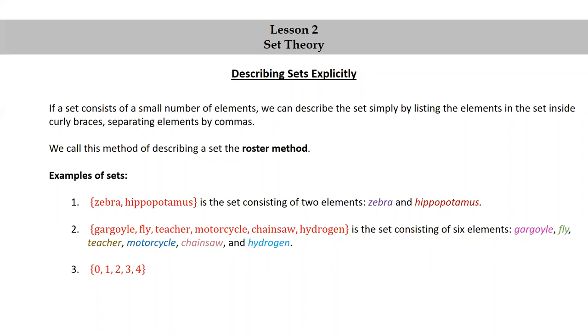The set of 0, 1, 2, 3, 4 is the set consisting of five elements: 0, 1, 2, 3, and 4. The elements in this set happen to be numbers.